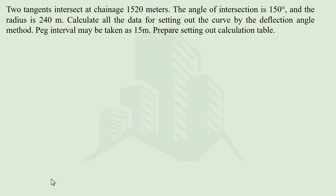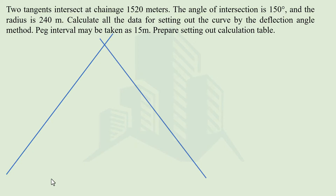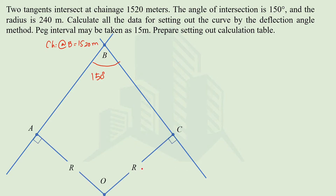We have been given two tangents which intersect at a chainage of 1520 meters. This is the back tangent and this is the forward tangent, intersecting at point B. The angle of intersection is given as 150 degrees, and the radius of the curve is also given as 240 meters.